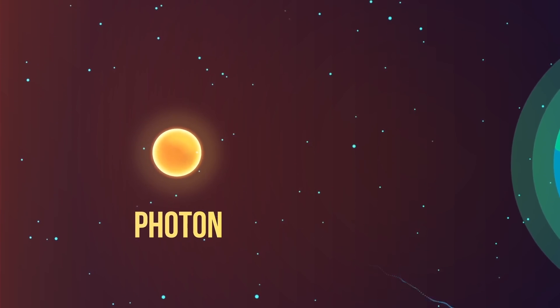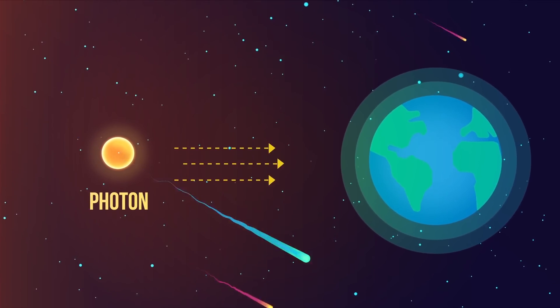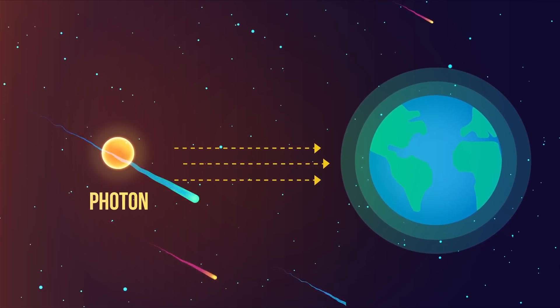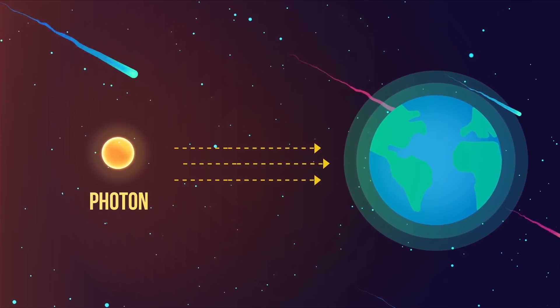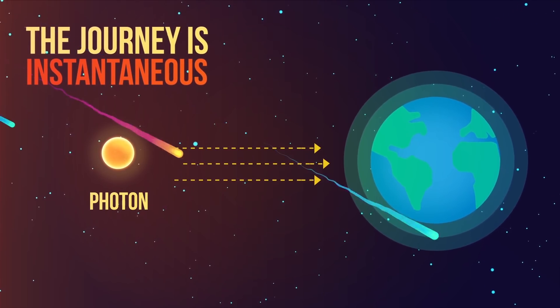Imagine, for example, a photon of light that is emitted by a star on the other side of the universe. It will take even at its incredible speed many millions of years to reach us on Earth and be seen by our eyes as a twinkle in the sky. For the photon though, the journey is instantaneous. It is created and then it reached us in the same instant.